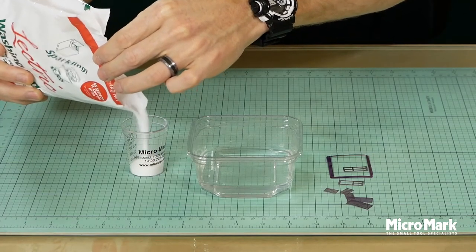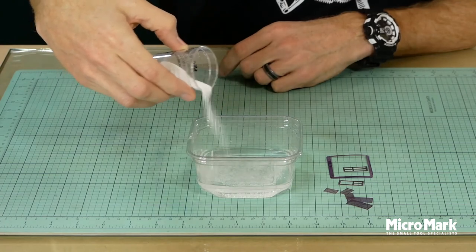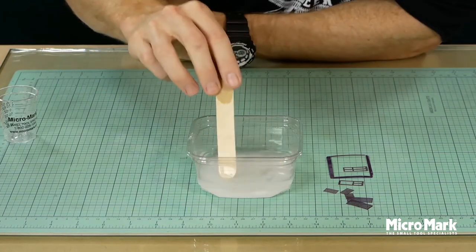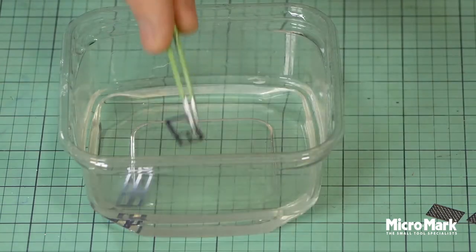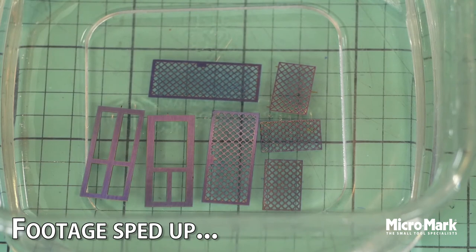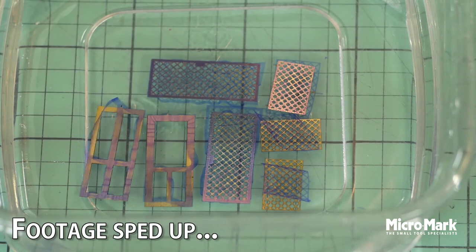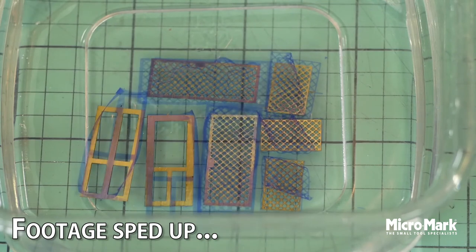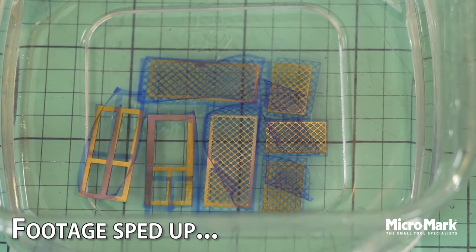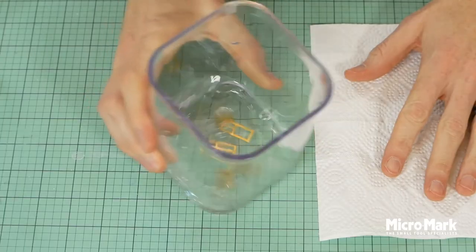To remove the rest of the photoresist I roughly mix a heaped teaspoon of washing soda in with water. After mixing it I just place the parts into the water and leave it to soak. After about 15 or 20 minutes the resist will just float away revealing the completed pieces. Now they just need a good rinse in clean water and we have our finished pieces.